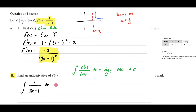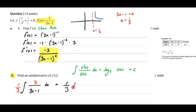To answer this, we need to make our numerator the derivative of the denominator. The derivative of (3x minus 1) is 3, so we multiply the numerator by 3 and also by 1 third out front to compensate. Now we can anti-differentiate: it gives 1 third times log_e of (3x minus 1). Because we're asked for an anti-derivative, we can let c equal 0, giving the final answer of 1 third log_e (3x minus 1).